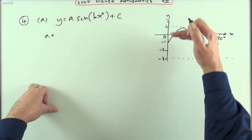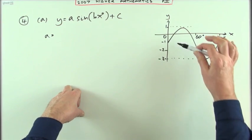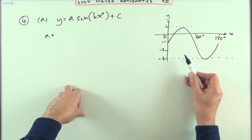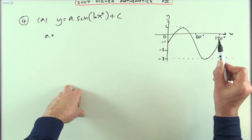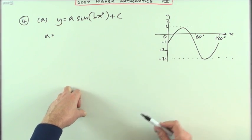The multiplying number, the coefficient of it, would be the amplitude. I won't write down amplitude, but A would stand for the amplitude, how much it rises and falls, how much it goes up and then how much it goes down from its axis of oscillation.